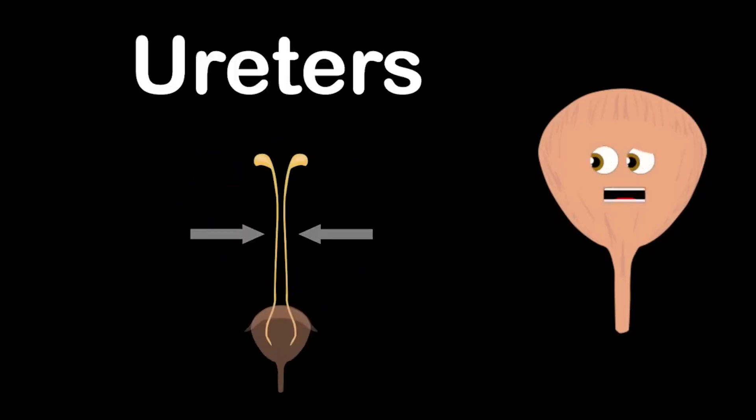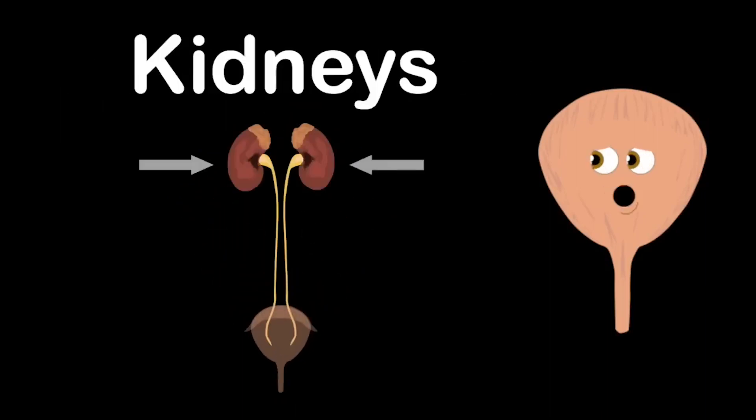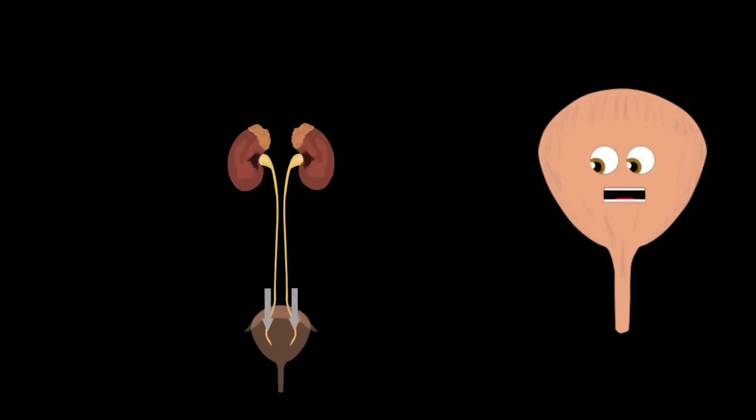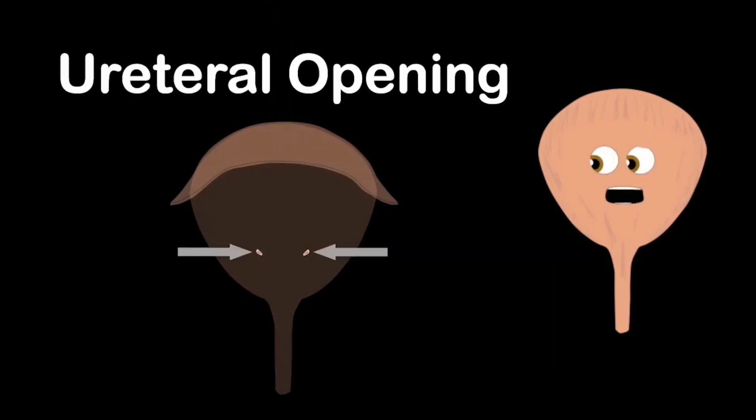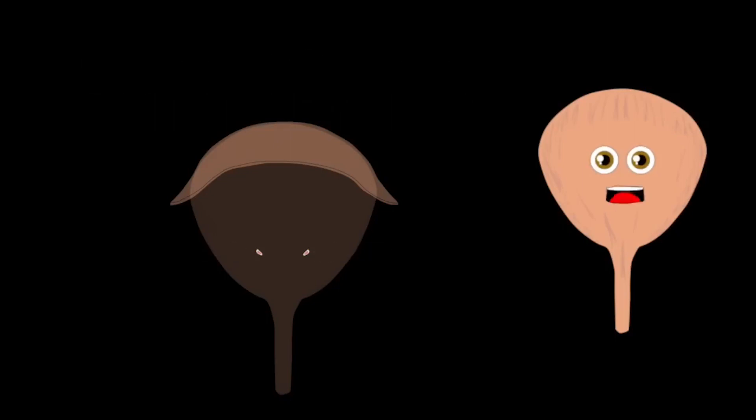The ureters bring urine waste from the kidneys. Smooth muscles move it down using peristalsis you see. Urine enters the bladder through ureteral openings and fills the bladder up like a leaky ground spring.